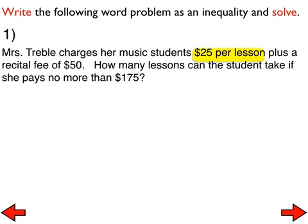All right. So here is number one. This problem looks really similar to the background knowledge problem that I put up there. The only difference is she wants to pay no more than $175 instead of a total of $75. So let's do this one together. The $25 per lesson, it's the $25 that is changing every single time depending on how many lessons she takes. That's 25x plus the recital fee of $50. Now the only question is, what does no more than mean?